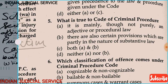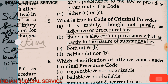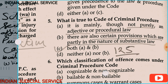Question 5: What is true about the Code of Criminal Procedure? It is mainly procedural law, but it has some parts which provide the nature of substantive law, like Section 125. The answer is option C — both A and B.